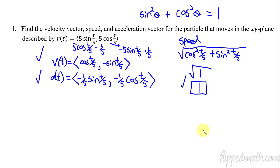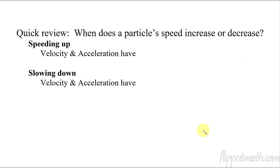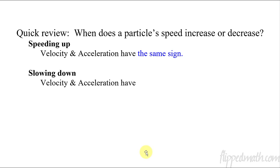Good. Now a quick reminder on when something speeds up or slows down. A particle speeds up when velocity and acceleration have the same sign — both positive or both negative. It slows down when they have different signs. So: same sign means speeding up, different signs means slowing down.